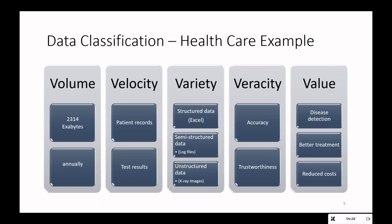Using the healthcare industry as an example: hospitals and clinics across the world generate massive volumes of data — 2,314 exabytes of data are collected annually in the form of patient records and test results. All this data is generated at a very high speed, which attributes to the velocity of big data.